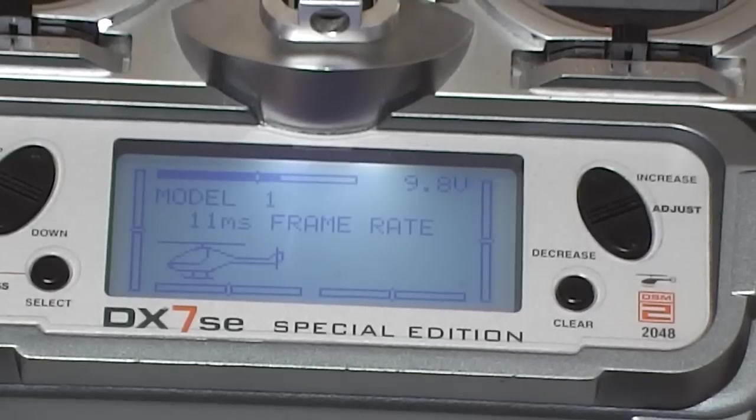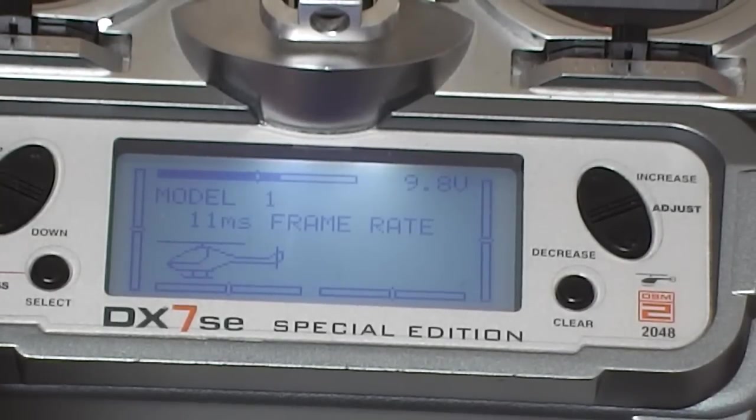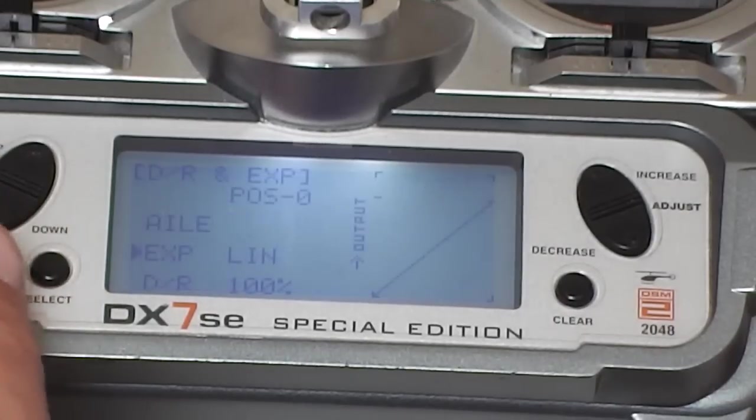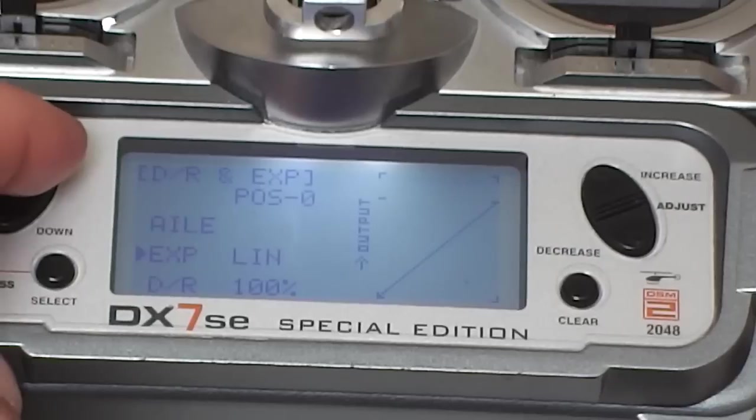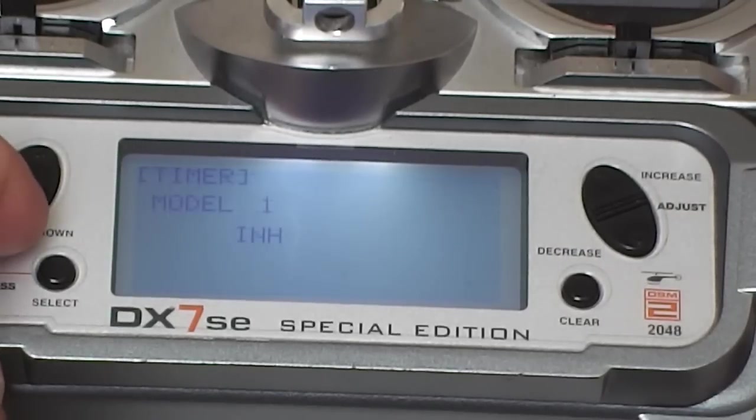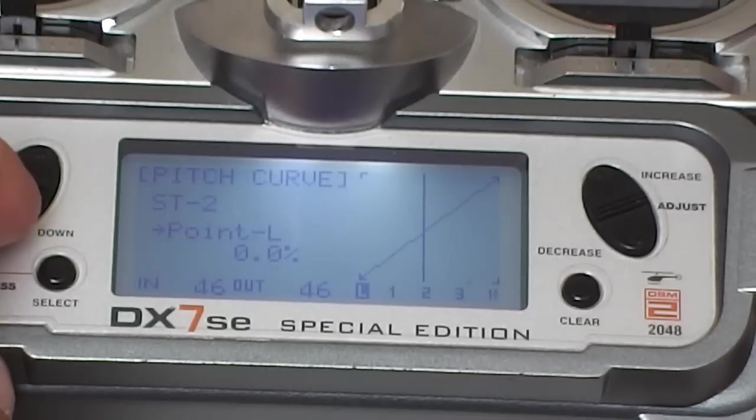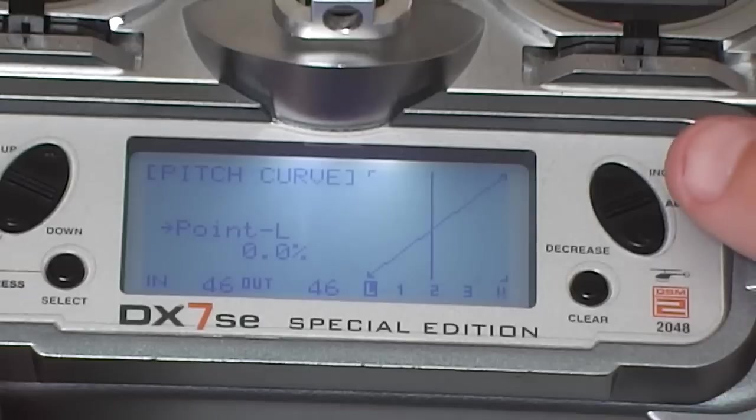So we want to get into the actual setup of the pitch curve. We're going to hold down the scroll down access down button and the select button at the same time, and that gets us into the normal mode. So we want to scroll up or down until we find pitch curve. This is stunt two, so we'll go to normal mode.